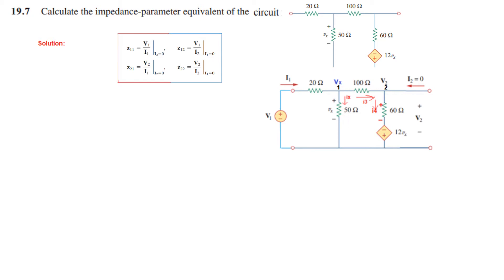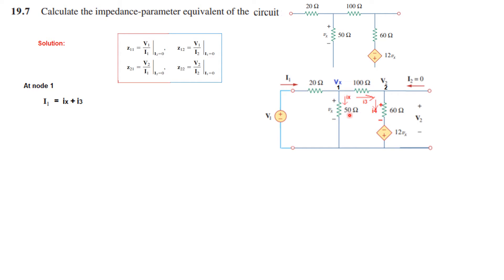For ease, we add a few parameters: currents and node voltages. We name this current Ix, this one I3, and this one I4. I2 is 0. This is node 1 and node 2. Node 1 voltage is Vx because this voltage is Vx, so it is the same voltage here. Node 2 voltage is V2. Now let's write the node equation at node 1 using KCL: current entering I1 equals current leaving, which is Ix plus I3.